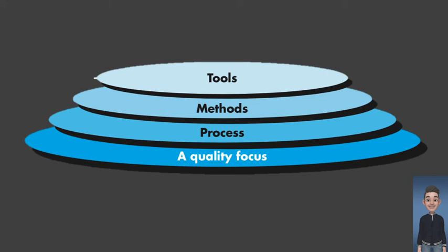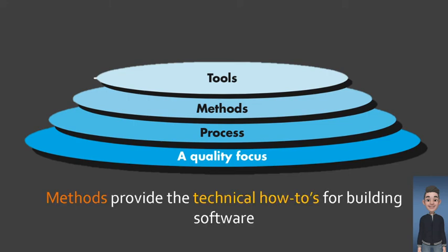The next layer is methods. Software engineering methods provide the technical how-tos for building software. Methods encompass a broad array of tasks that include communication, requirements analysis, design modeling, program construction, testing, and support. Methods rely on a set of basic principles that govern each area of the technology and include modeling activities and other descriptive techniques.